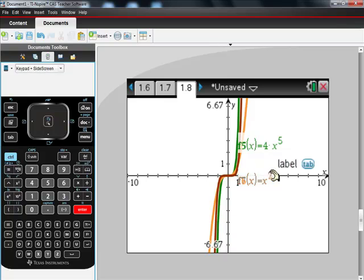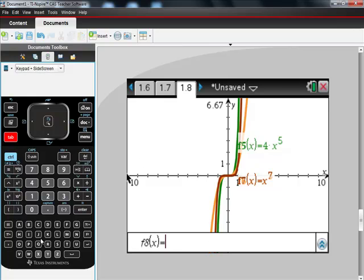x to the 7th. Remember, all I'm doing is changing the exponential values here, in this case, and I'm keeping them all odd. So let's just look at one more tab, x to the 9th.